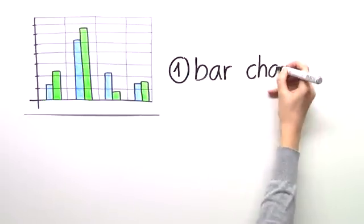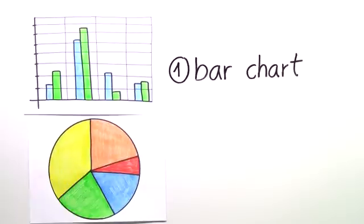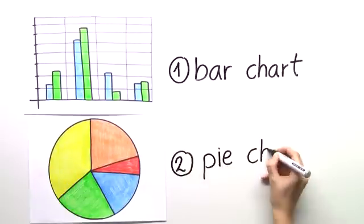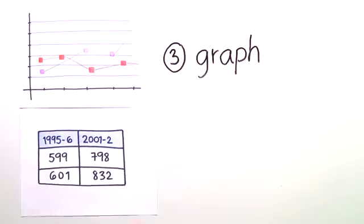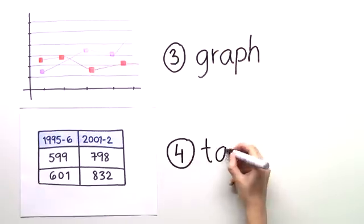Type 1: the bar chart. Type 2: the pie chart. Type 3: the graph. And type 4: the table.